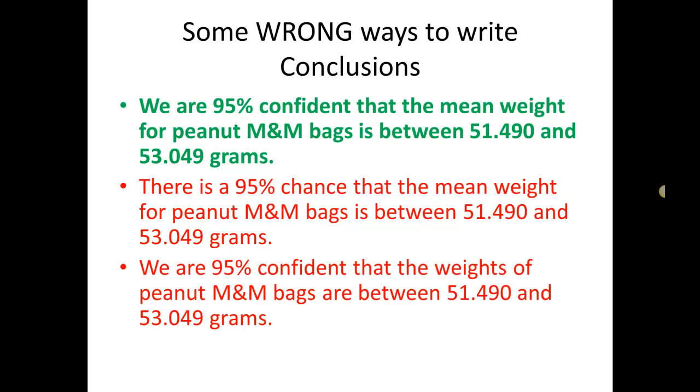Another incorrect way to write it is this one: we are 95% confident that the weights of peanut M&M bags are between 51.49 and 53.049. So a confidence interval tells us where the mean of the population is. That's it. The thing that's wrong with this second one here is that it's talking about individuals. It's saying the weights of peanut M&M bags, individuals, is in this interval, which is incorrect. We're only saying that the mean weight of all individuals is in that interval, not that individual bags will weigh in that interval.